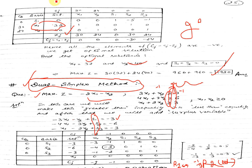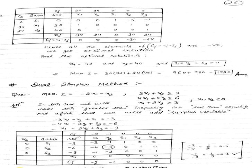The table formation is the same as the simplex method, but the process applied to this table is different. I have written the operation: R2 changes to minus one-third times R2. Just remember this operation. I am going to delete it so note it down.